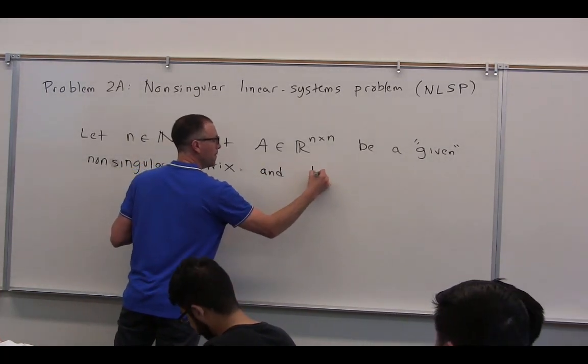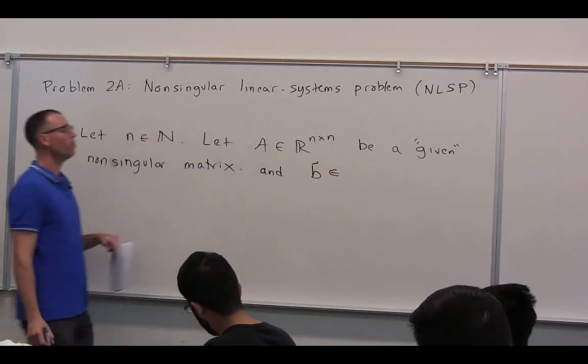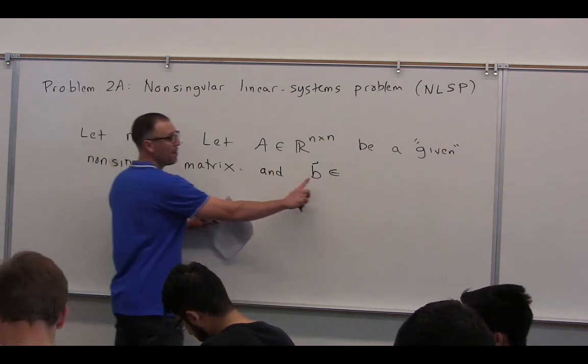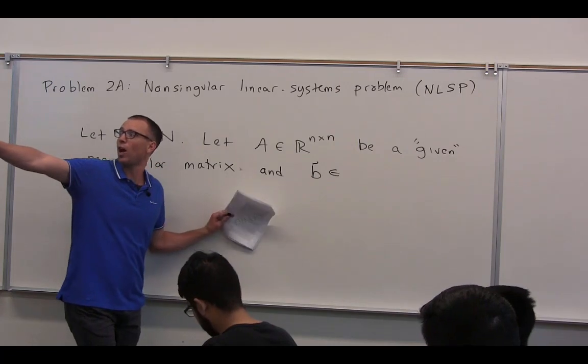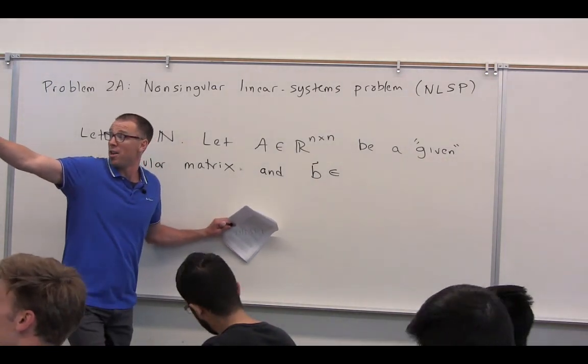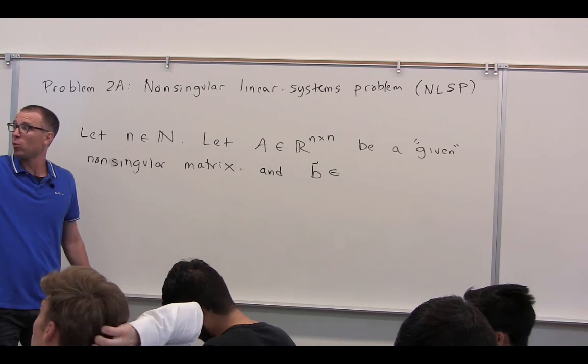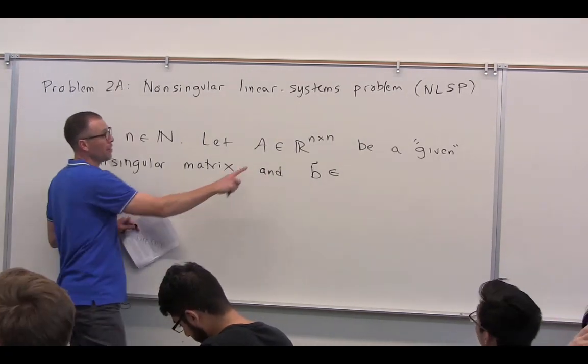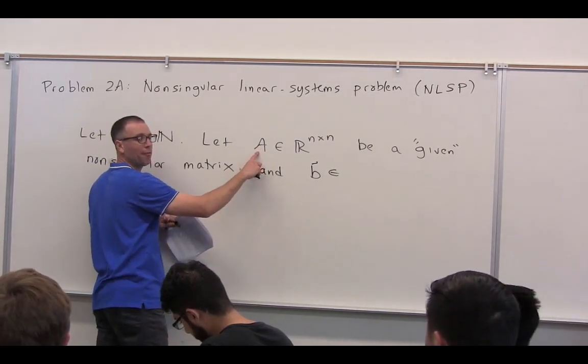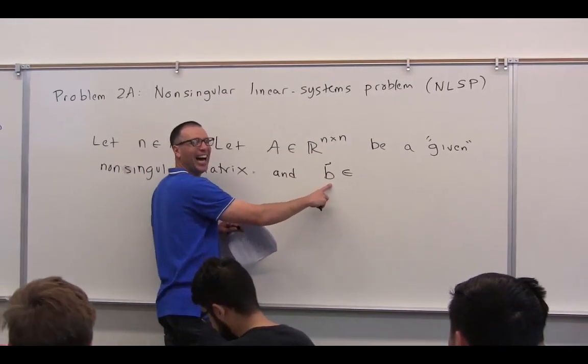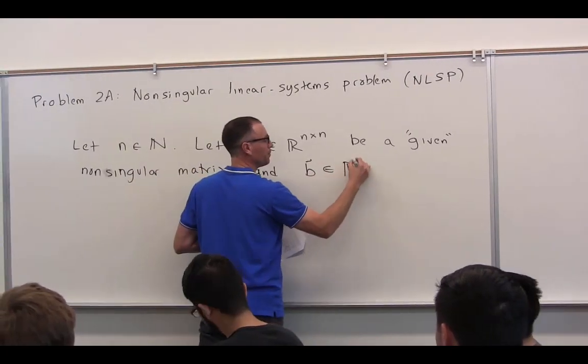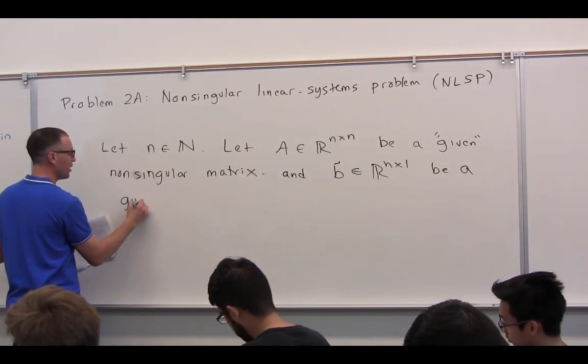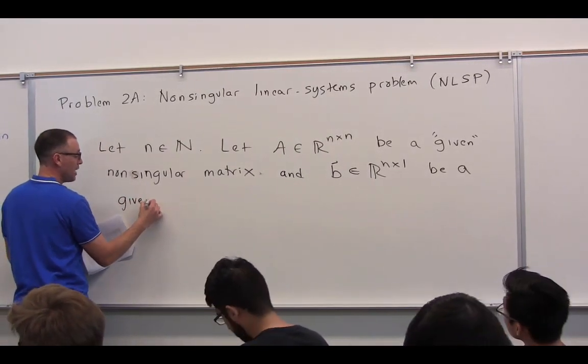And B, could you guess how big B would have to be? Well, be careful. It's the same style of B as over there. The number of rows of B was equal to the number of rows of matrix A. So in this case, how many rows does matrix A have? N of them. So how big should B be? N by one. So let's let A be a non-singular matrix and B be a given vector.